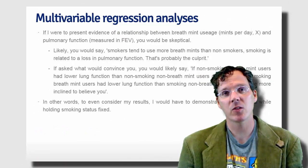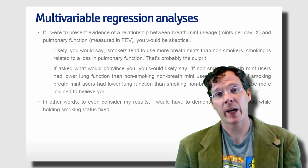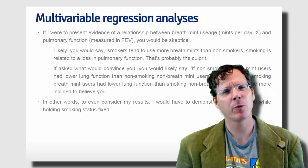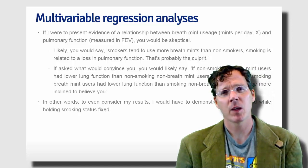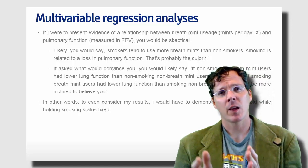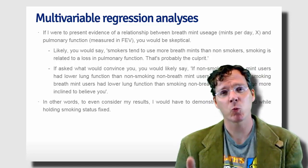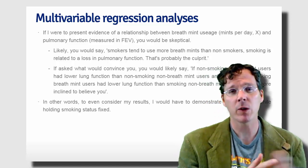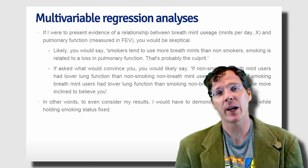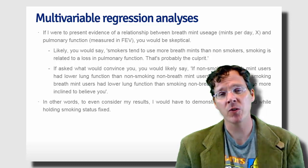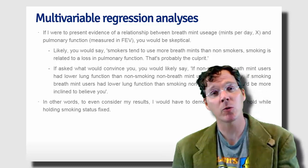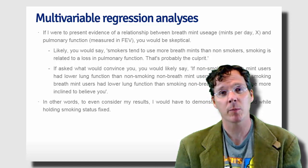In any instance where you're using a predictor x to predict a response y, and you find a nice relationship, if that predictor hasn't been randomized to the subjects or units, then there's always a concern that there's another variable that you either know about or don't know about that might explain the relationship.